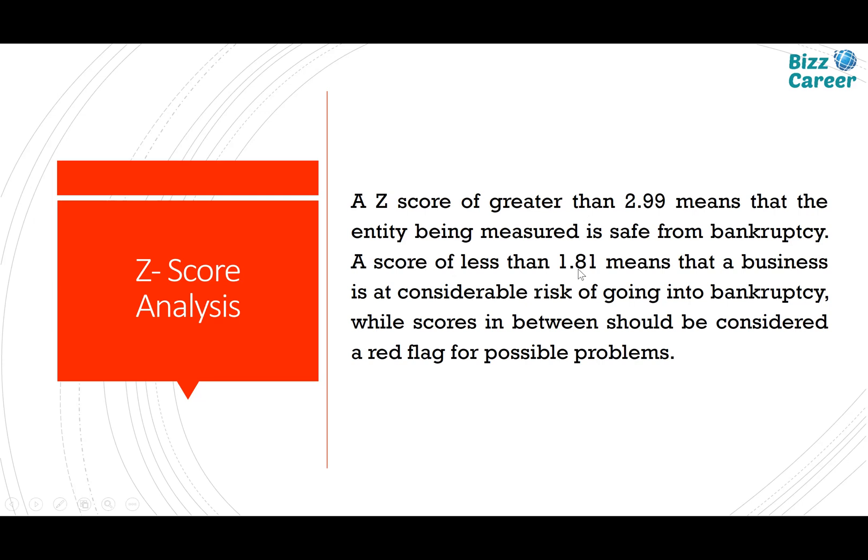In practice, following Altman's model, a score above 2.5 is considered very good, and below 1.5 would indicate likely bankruptcy. This is my personal opinion and personal observation based on applying the model.